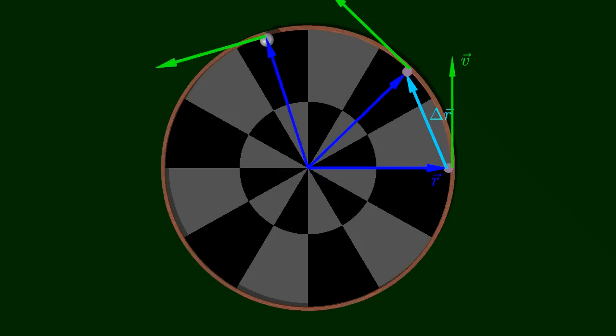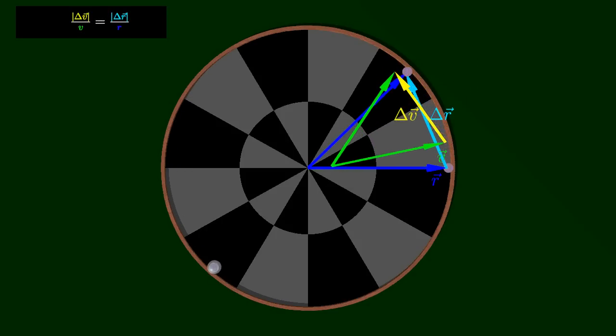The magnitude of the acceleration can be determined by noting that over a short time interval, the change in the position vector and the change in the velocity vector form similar isosceles triangles.